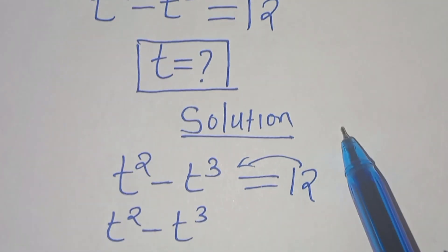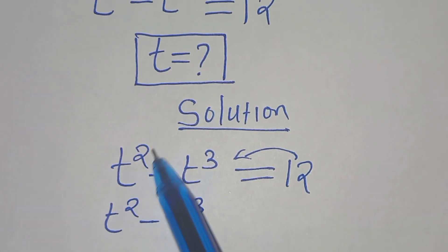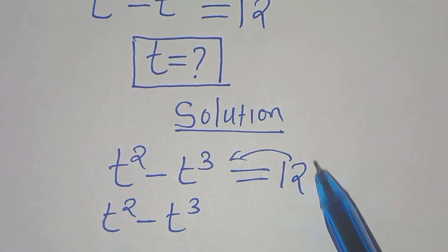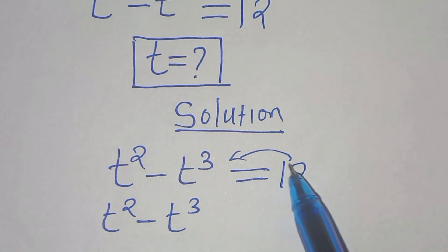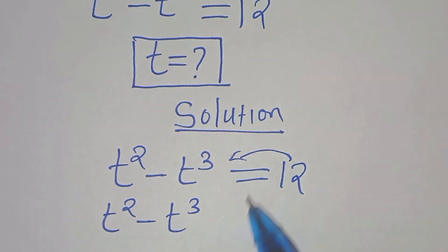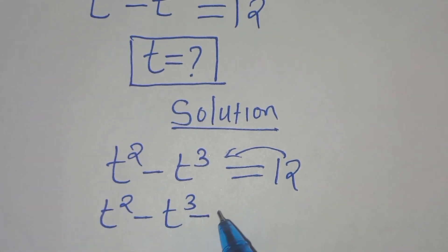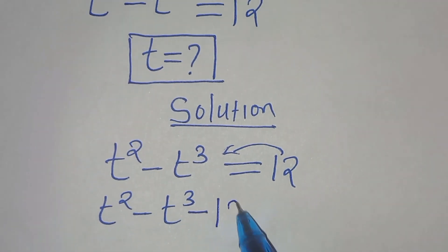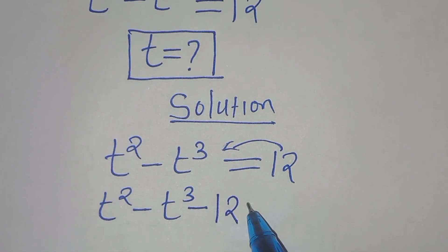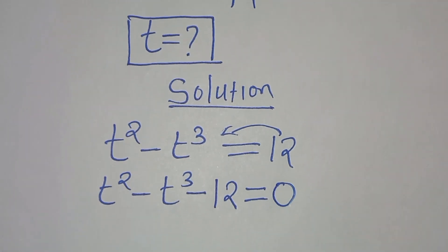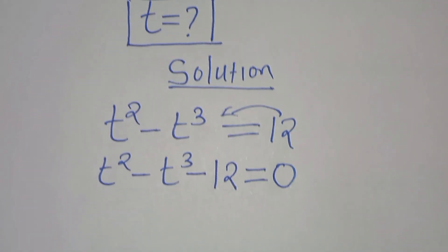From here we have t squared minus t to the power of 3 equals 12. Let's take 12 to the left hand side so that we have t squared minus t to the power of 3 minus 12 equals 0.